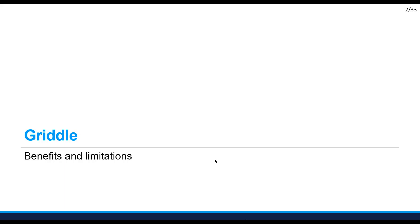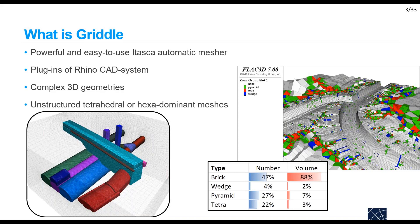Let's first start by looking at Griddle, its benefits and limitations. Griddle is a powerful and easy-to-use automatic mesher developed recently. It's a plugin of the Rhino CAD system, so it benefits from the full CAD environment of Rhino and it allows you to create complex 3D geometries, producing unstructured tetrahedral or hexadominant meshes. A hexadominant mesh consists mainly of bricks, which are the best elements for modeling plasticity in FLAC3D.